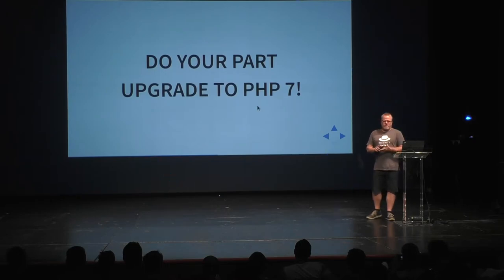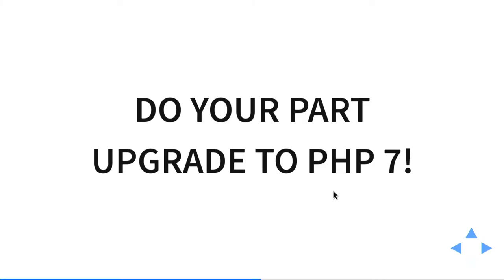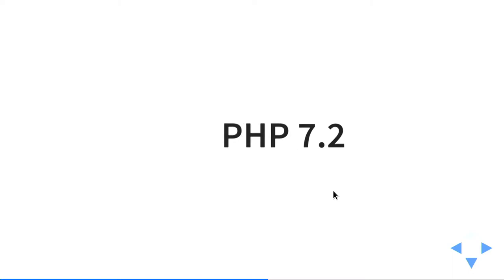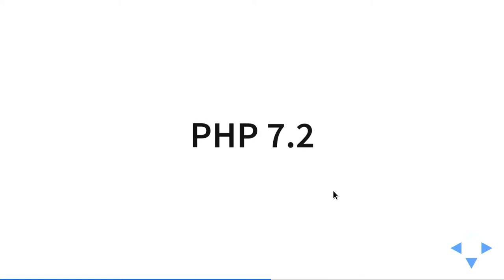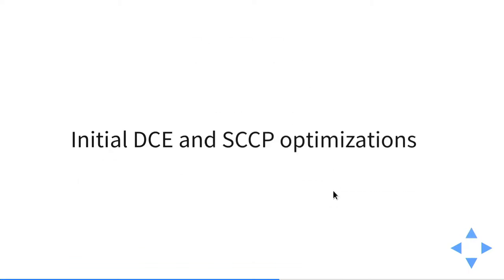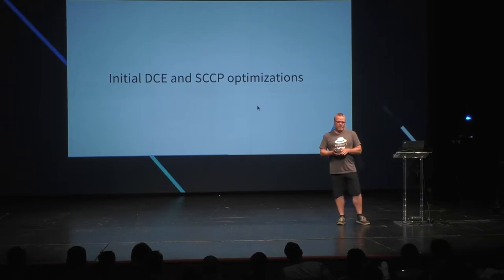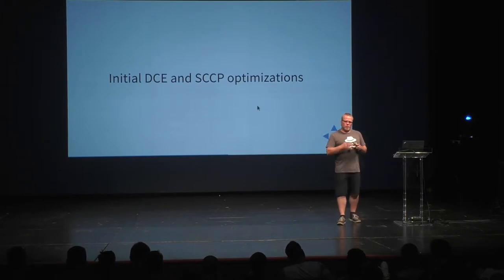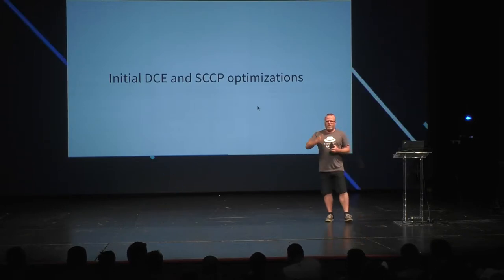I've seen people write Nintendo 64 emulators entirely in PHP, and you can actually play Nintendo games quite well in PHP 7 because of how fast it is. So please, do your part — upgrade to PHP 7. Let's talk about new things in PHP 7.2, which is the current stable version — if you're upgrading today, PHP 7.2 should be the version you upgrade to.